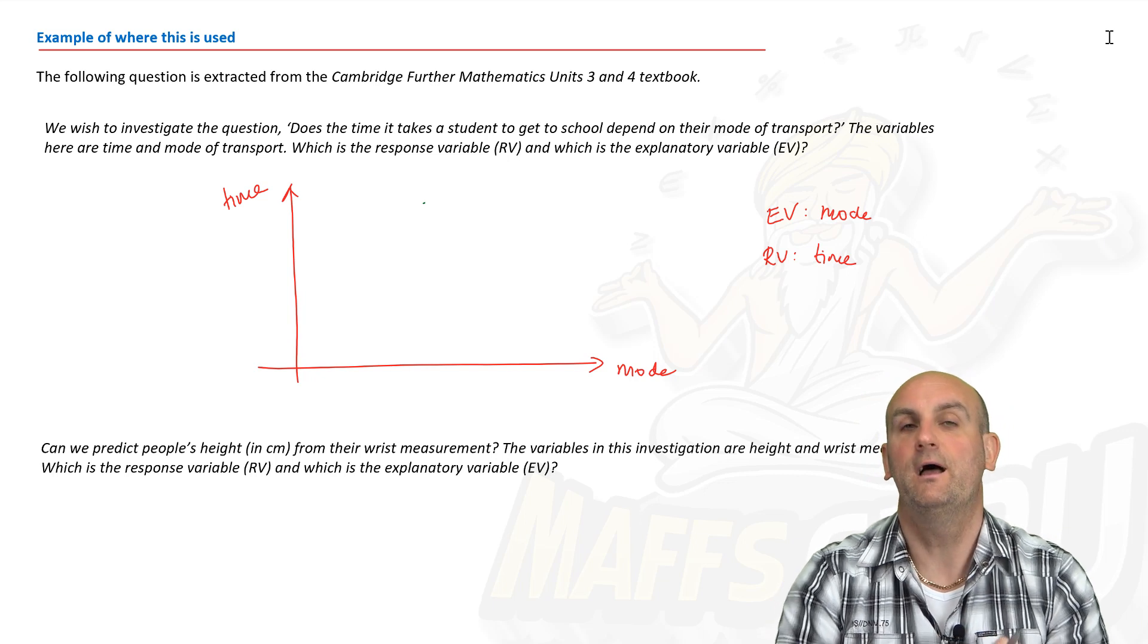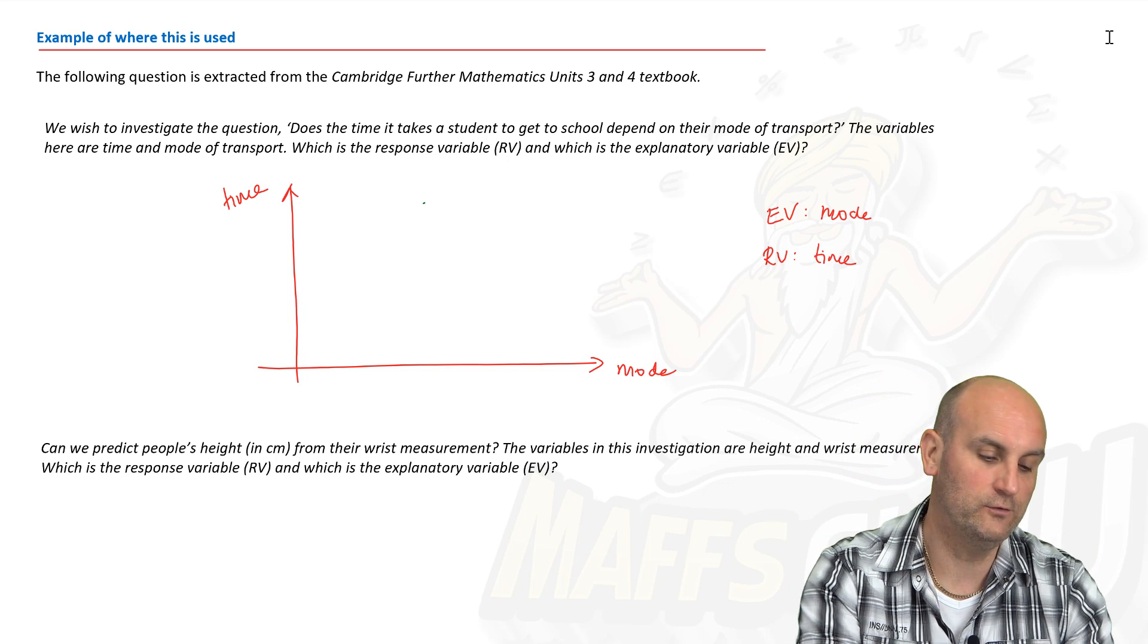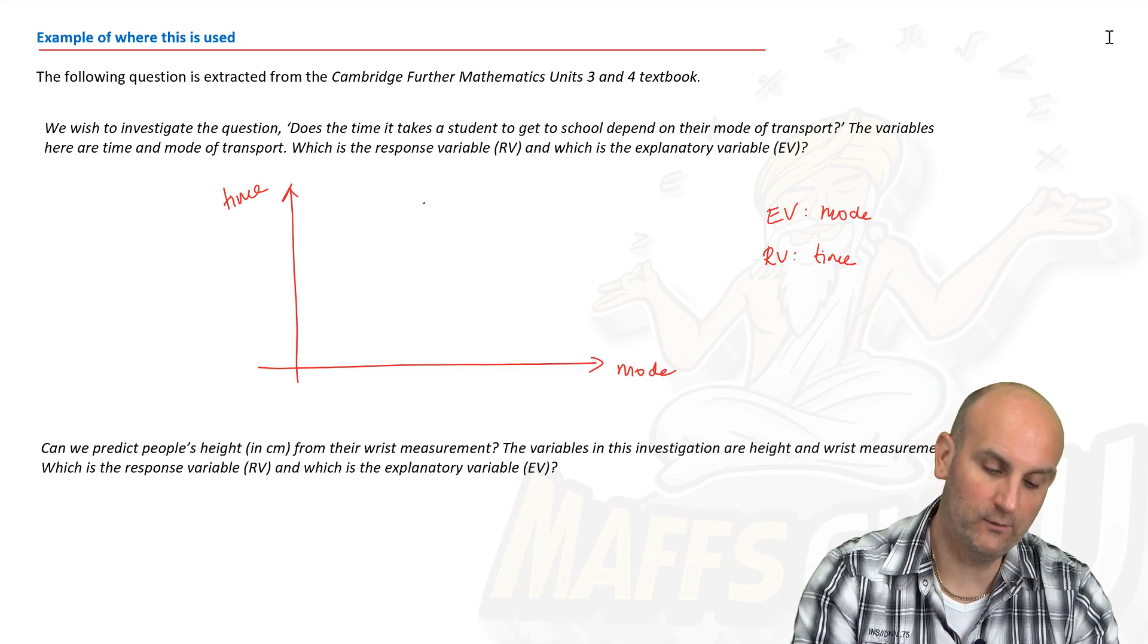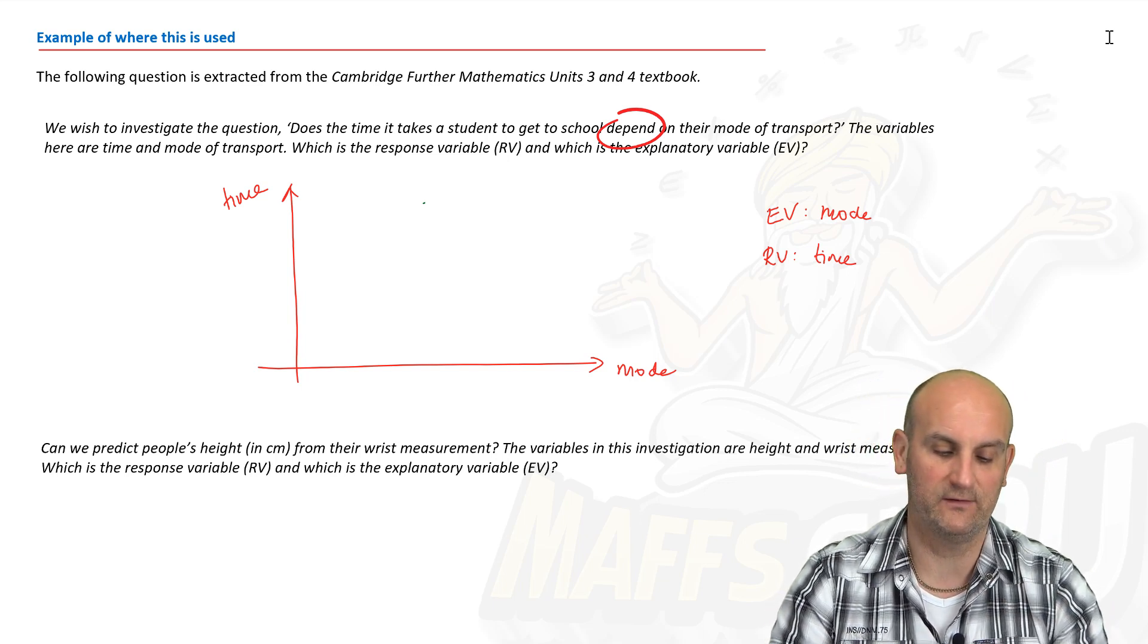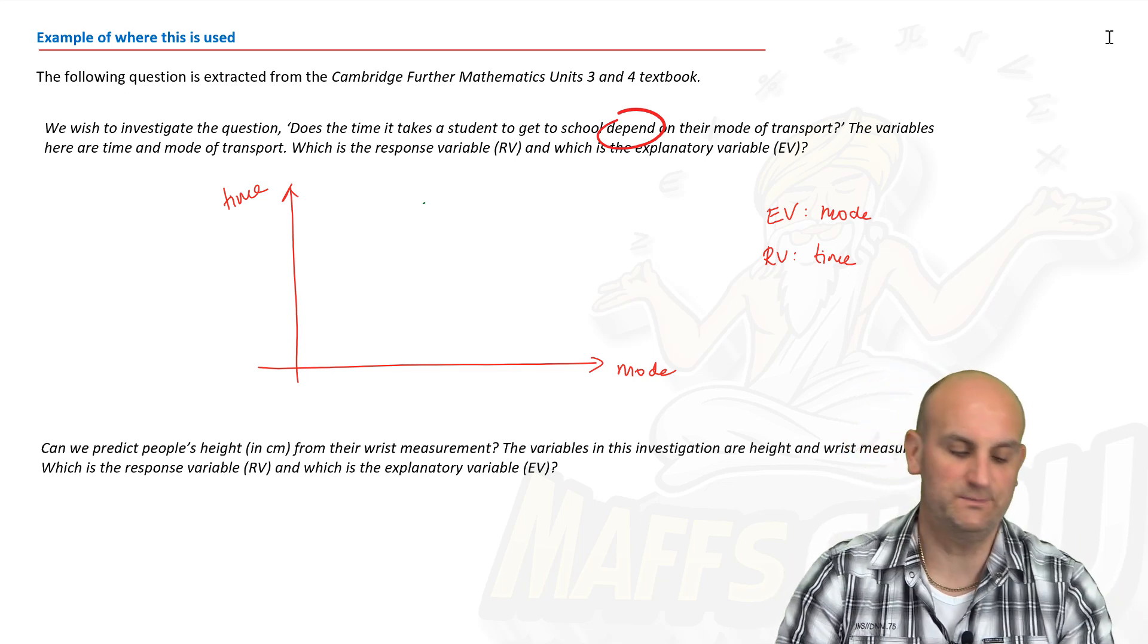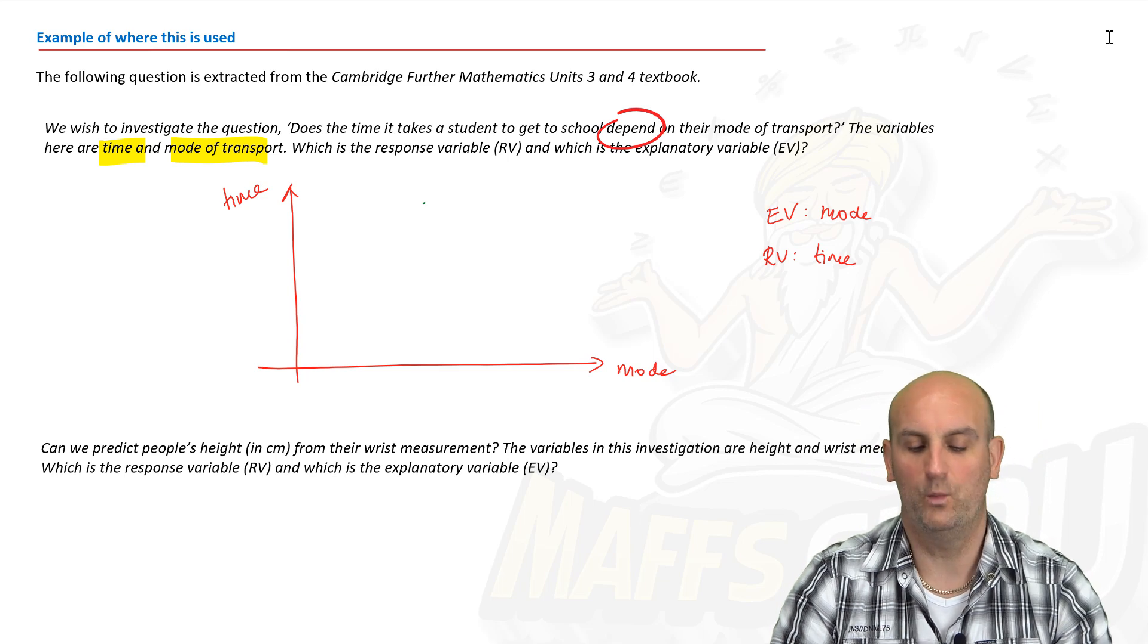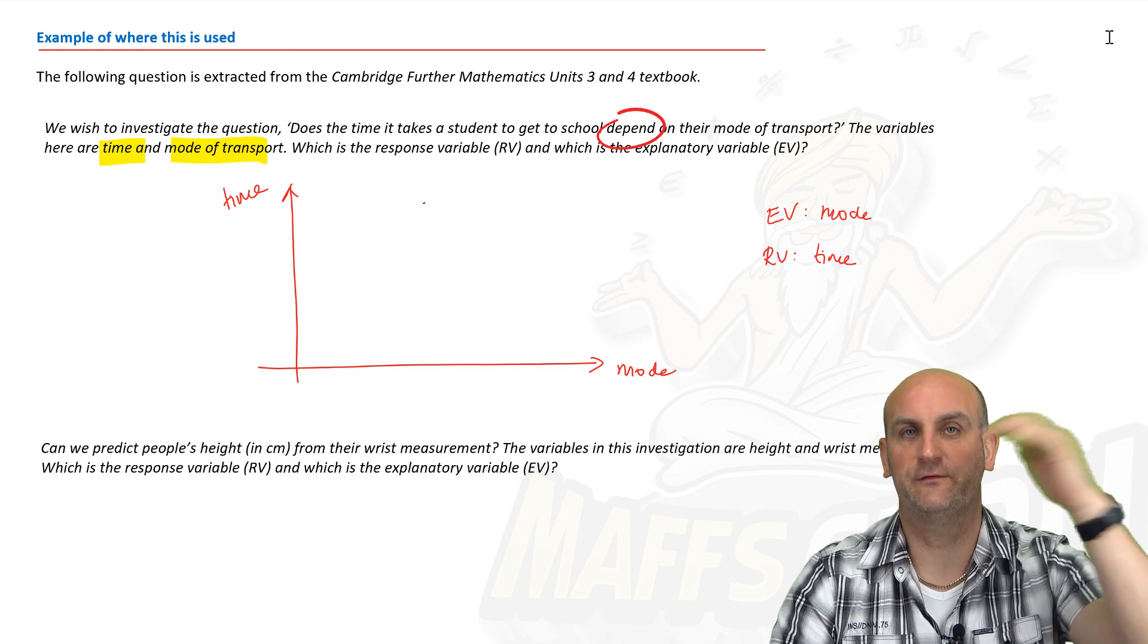But there are a couple of questions taken with permission from the Cambridge Further Maths Unit 3 and 4 textbooks. Thank you very much Cambridge for allowing me to use them. It says we wish to investigate, does the time it takes a student to get to school depend on their mode of transport? Now the word depend could also be used as predict. Can we predict the time it takes to school depending on their mode of transport? So they're giving us two variables which are time and mode of transport. Which one is the response and which one is the explanatory?